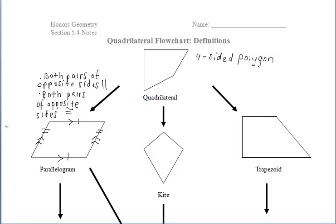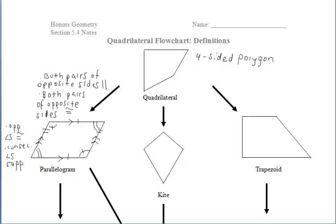Now let's discuss the angles. In a parallelogram, the opposite angles are always going to be congruent — let's put tick marks on our diagram. And finally, the consecutive angles in a parallelogram always have to be supplementary, or add up to 180 degrees. Consecutive angles are angles that are next to each other, or in a row.